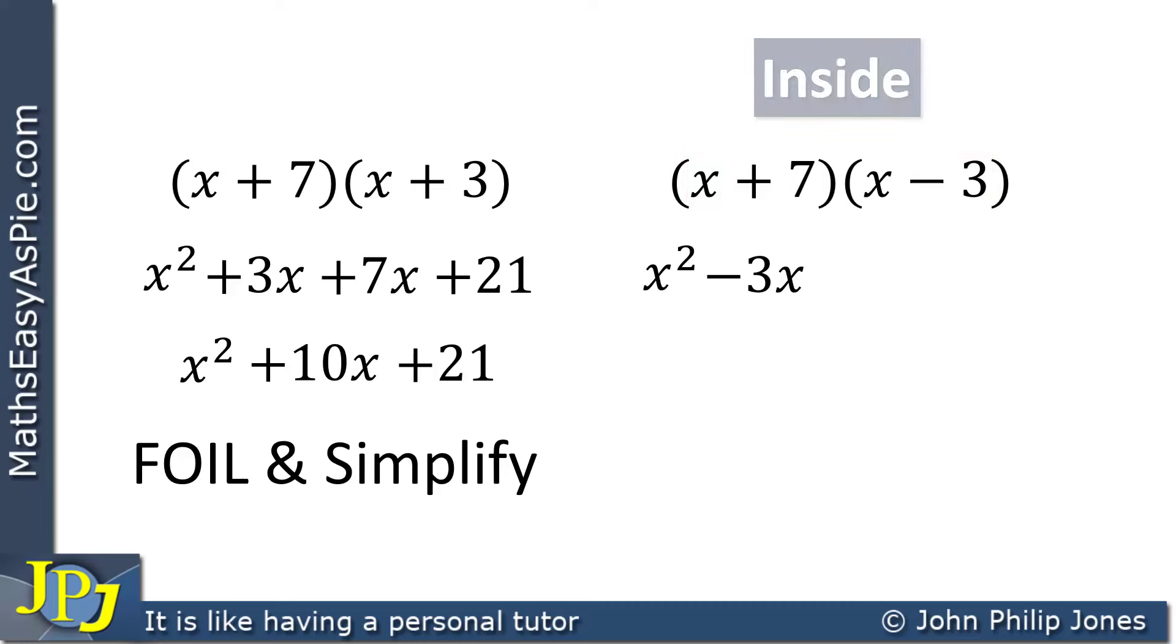We then consider what's on the inside, which is the plus 7 and the x. You multiply them together, and you get plus 7x. And then, of course, you consider what is last. Now, previously, I referred to this as what is left, but you can see that some people consider FOIL, where the last letter is derived from the word last.